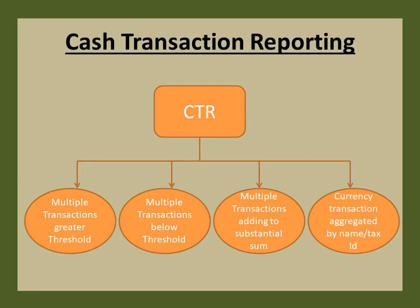Going ahead, let us also see some of the filters for cash transaction reporting: 1. Currency activity including multiple transactions greater than the threshold limit. 2. Currency activity — single and multiple transactions — below the threshold reporting requirement. 3. Currency transactions involving multiple lower-currency transactions that over a period of time, e.g., 15 days, aggregate to a substantial sum of money. 4. Currency transactions aggregated by customer name, tax identification number, or customer information file number.